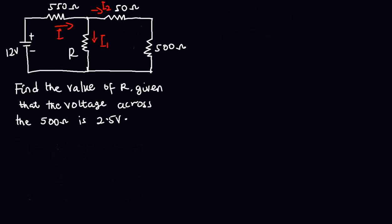Hello and welcome to this lesson. In this video I am going to solve this question. The question says we should find the value of R, given that the voltage across the 500 ohms resistor is 2.5 volts.